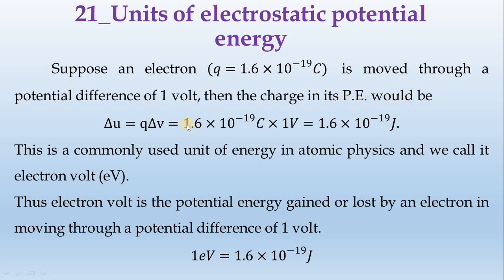Potential energy delta U is equal to Q times delta V. With a 1 volt potential difference and charge 1.6 times 10 to the power minus 19 coulombs, the potential energy is equal to 1.6 times 10 to the power minus 19 joules. This energy unit is the electron volt.